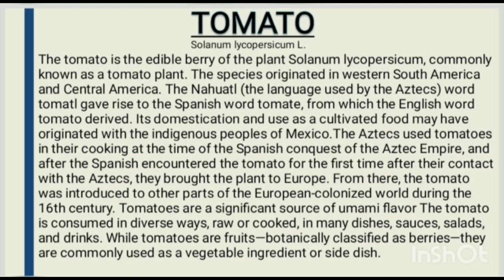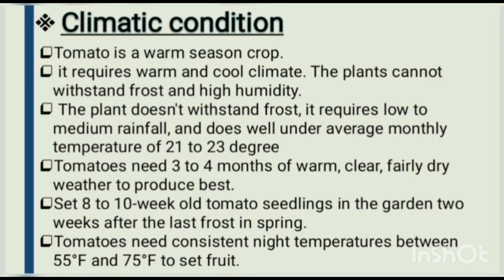Climatic conditions: tomato is a warm season crop that requires a warm and cool climate. The plants cannot withstand frost and high humidity. It requires low to medium rainfall and does well under an average monthly temperature of 21 to 23 degrees Celsius. Tomatoes need 3 to 4 months of warm, clear, fairly dry weather to produce the best set. Plant 8 to 10 week old tomato seedlings in the garden 2 weeks after the last frost in spring. Tomatoes need consistent night temperatures between 55°F and 75°F to set fruit.